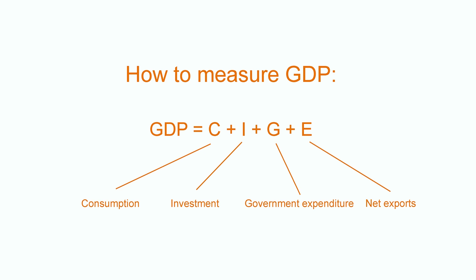G is government expenditure — specifically, what the government purchases. It excludes pure redistributive transfers like social security. And E is the net exports of the country, that is, exports minus imports.